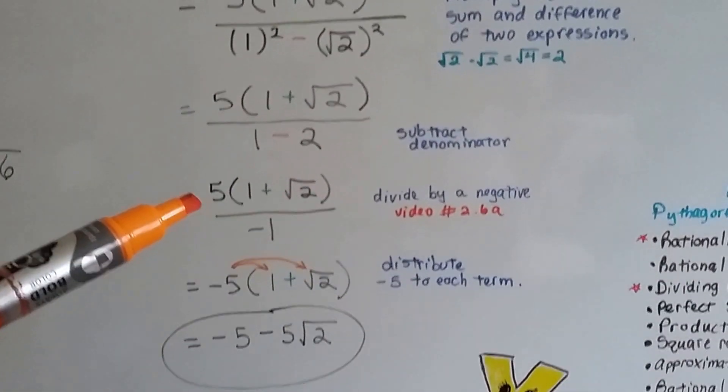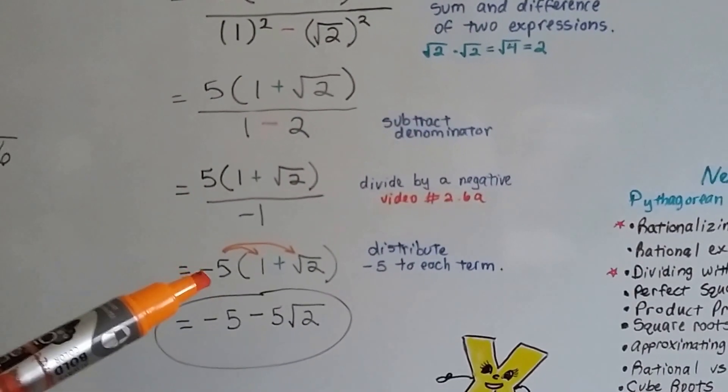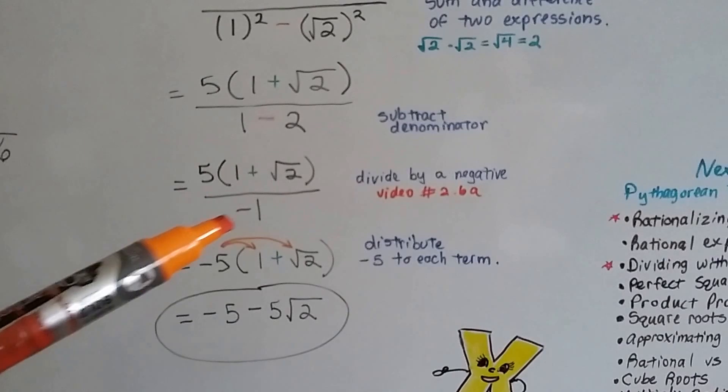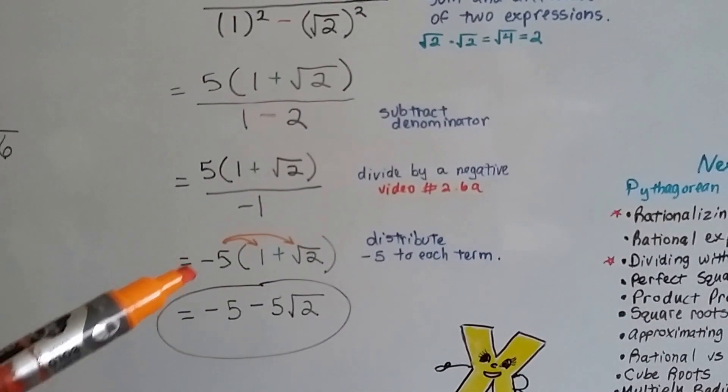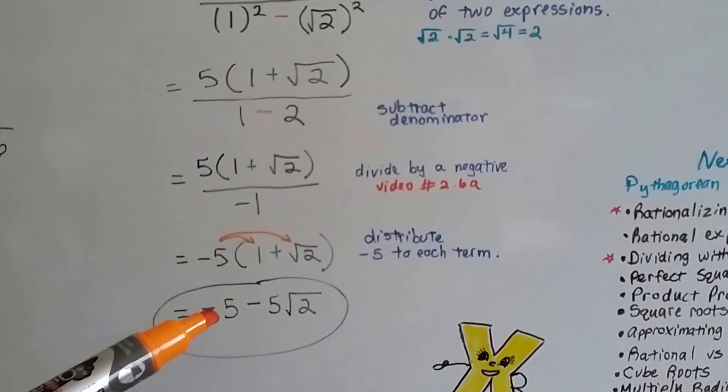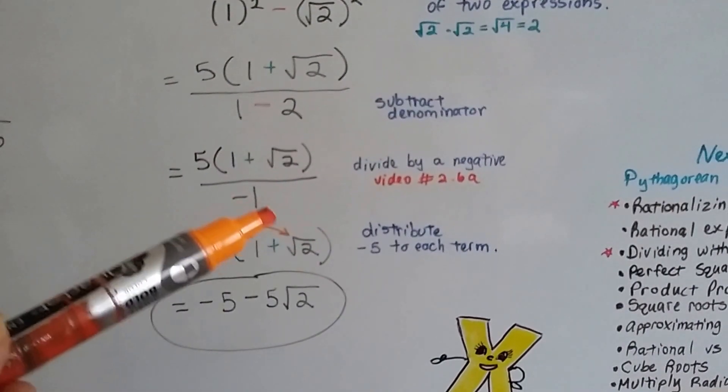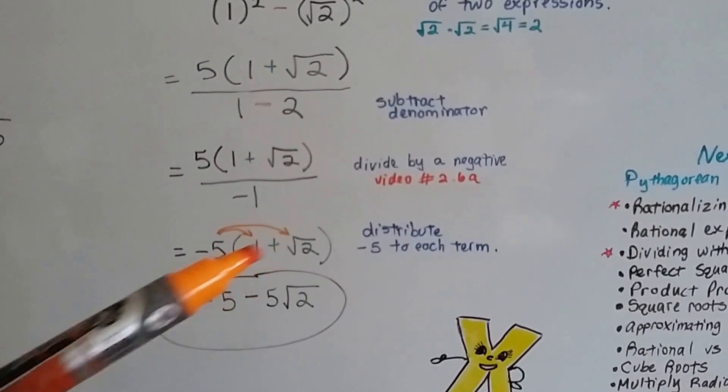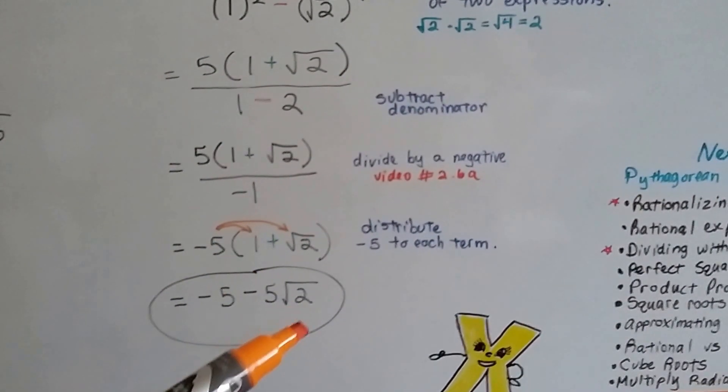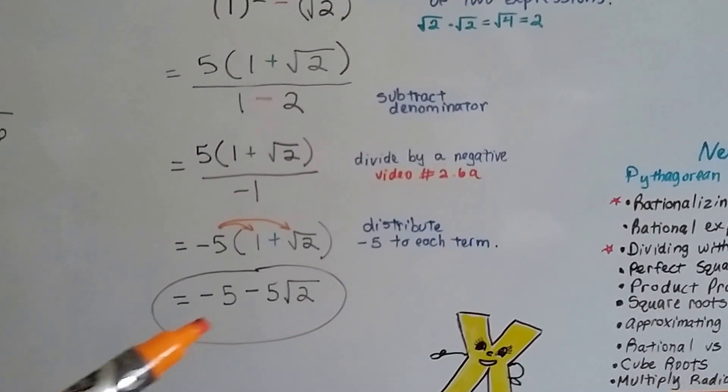This ends up becoming negative 5. See? So, negative 5 gets distributed to each term inside the parentheses. So, negative 5 times 1 is negative 5. And negative 5 times square root of 2 is negative 5 square root of 2. And there's our answer.